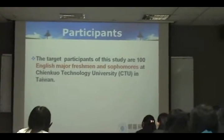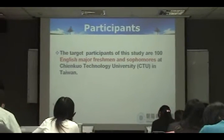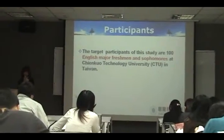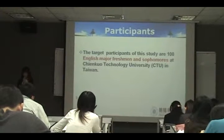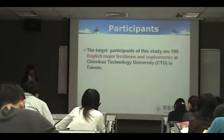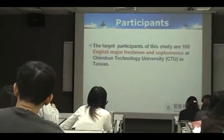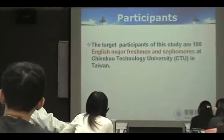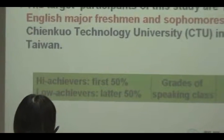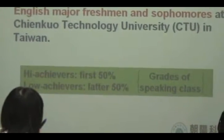Here comes the methodology. The target participants are 100 English major freshmen and sophomores at Tsinggu Technology University. Since the study will compare differences between high achievers and low achievers, participants will be divided into two groups based on the scores they receive in speaking classes.